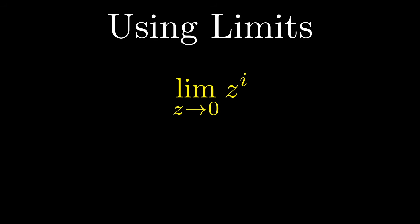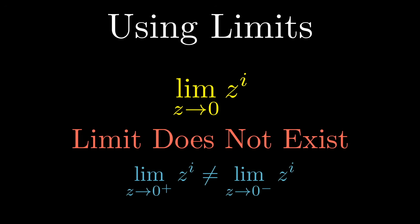Problem is, it doesn't take too much to show that this limit does not exist. If we approach from two different directions, we're getting two different results. Hence, this limit does not exist and doesn't get us any closer to an answer. But it does give us some insight into why this might not exist.